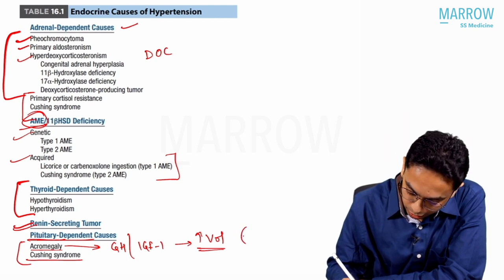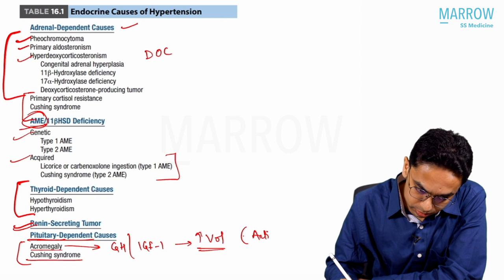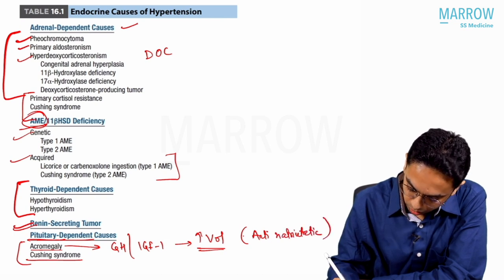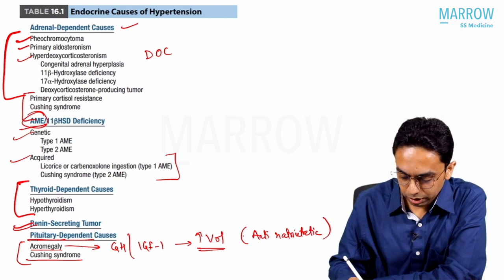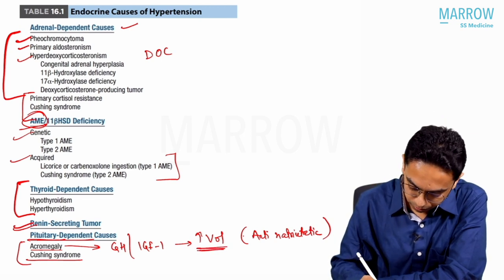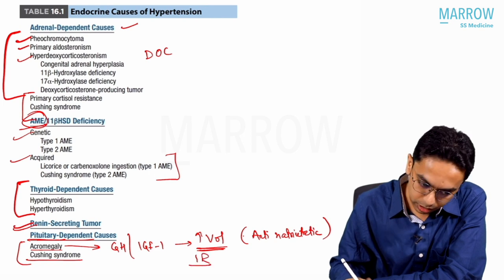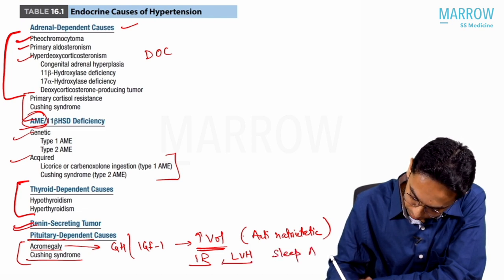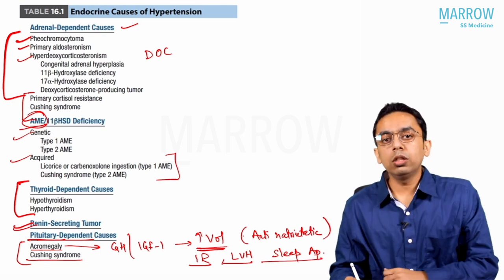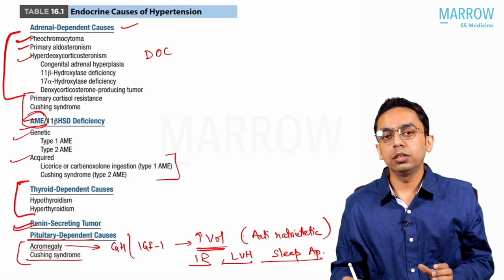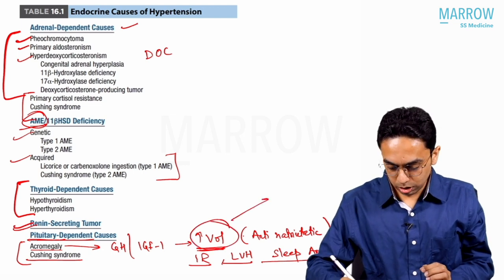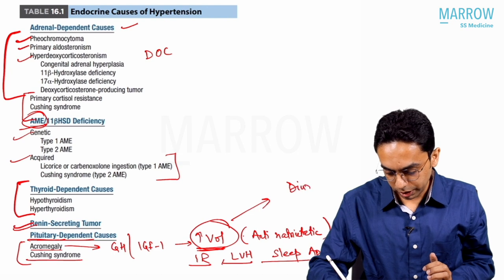In acromegaly, increased GH and IGF-1 cause increased volume due to an anti-natriuretic effect. Other than that, there is insulin resistance, LVH, and sleep apnea — all of which cause hypertension in acromegaly. Because there is an increase in volume, the drug of choice is a diuretic. This has also been asked in exams.